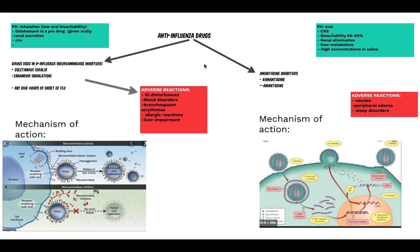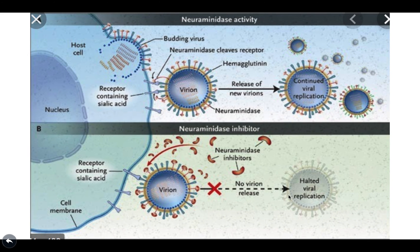Moving on to anti-influenza drugs, used against influenza, there are two groups: neuraminidase inhibitors and amantadine inhibitors. Neuraminidase inhibitors work by blocking sialic acid receptors. Once these inhibitors attach onto the virions, the neuraminidase cannot bind to receptors containing sialic acid, so the virus cannot be accepted into the host cell.